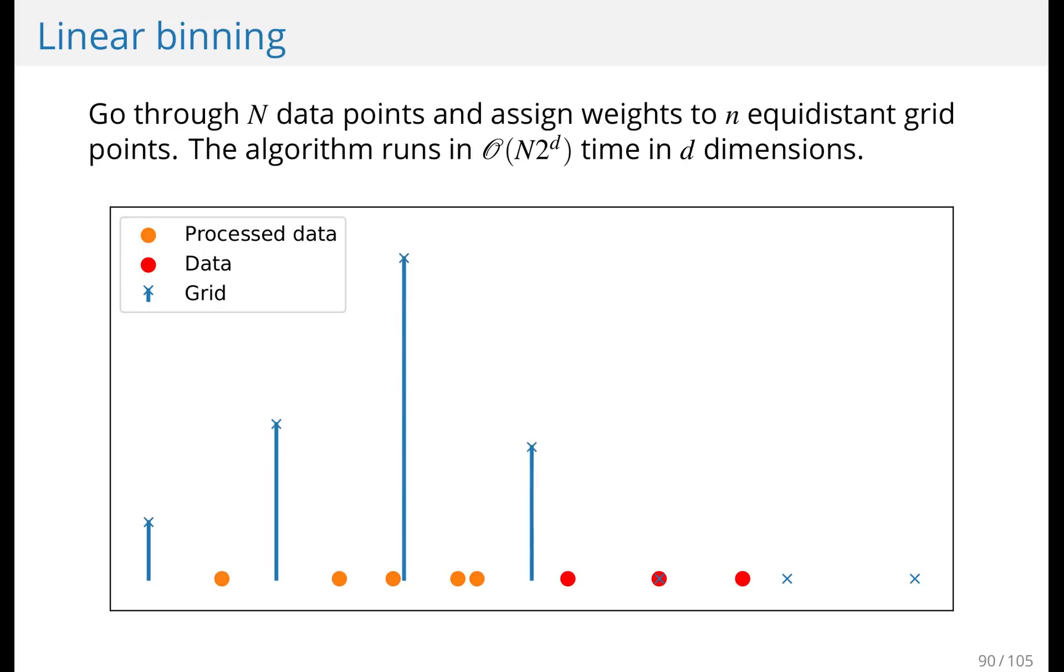And then you go through the data like this assigning weights. This one is just to the left of the grid point. So it will assign almost everything to this fifth grid point.